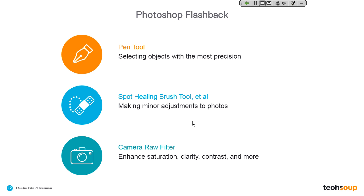The first tool is the Pen tool, which is useful for selecting objects in your photographs — people, devices, whatever you want to isolate. It is the most precise method of selecting anything. You may have used the Magic Wand tool or the Quick Selection tool — these are great for simple elements like an all-white background. But if you want to select somebody's head with hair, those tools become insufficient. The Pen tool is the precise scalpel for detailed selections.